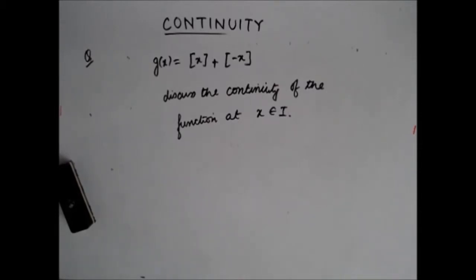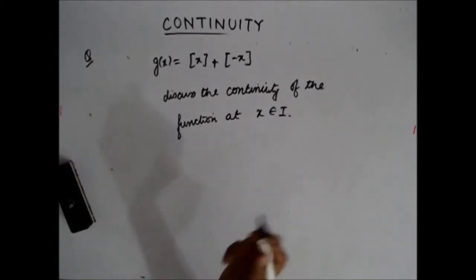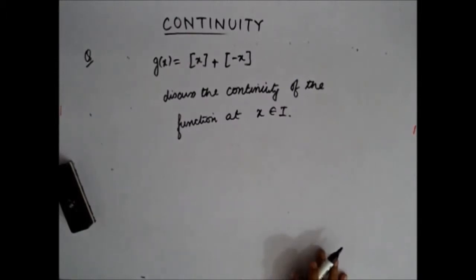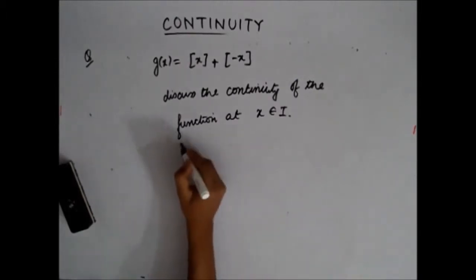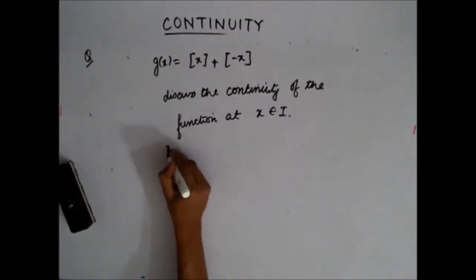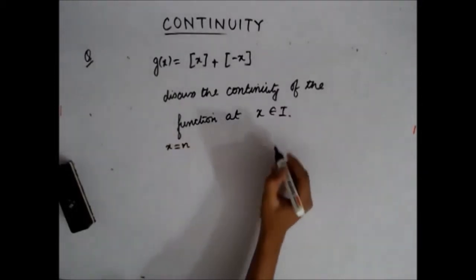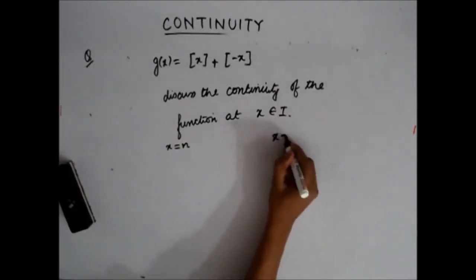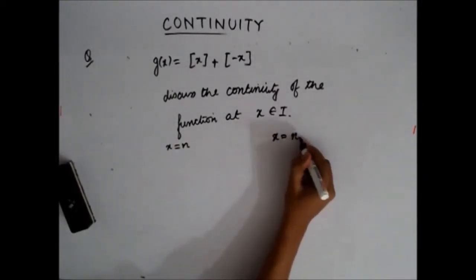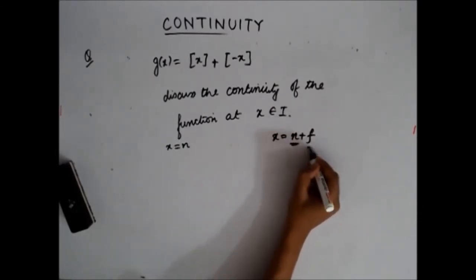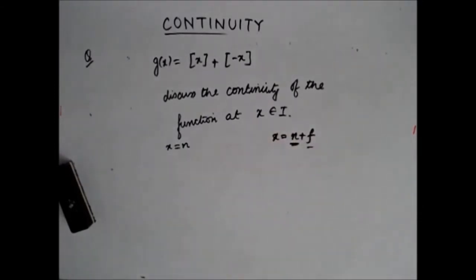Let us first get rid of the box function and see what g(x) is. To find g(x), let us take two cases. First, x is an integer, and second, x is not an integer. So I can write x as some integer plus some fractional value.